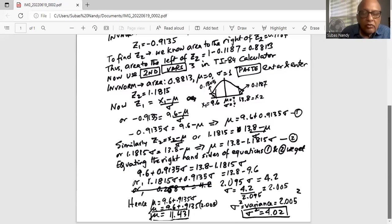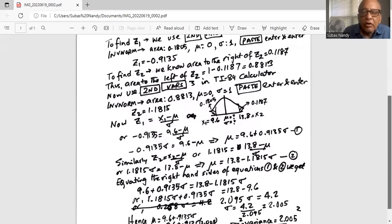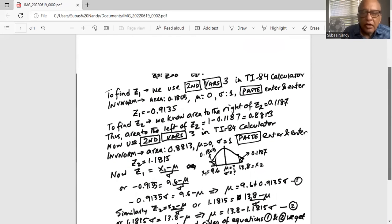Now we can take this sigma value of 2.005 and plug it into the first equation for mu which is 9.6 plus 0.9135 sigma. So we are plugging in the value of sigma we get 9.6 plus 0.9135 times 2.005. So mu is 11.43. So the mean is 11.43 and the variance is 4.02 of the normal random variable x.